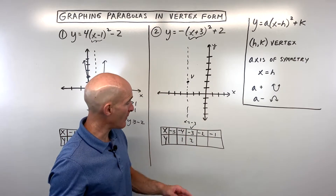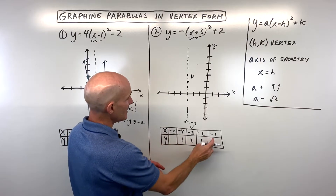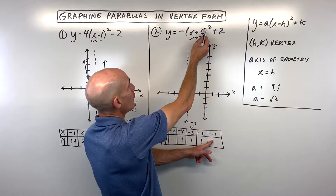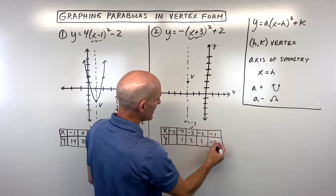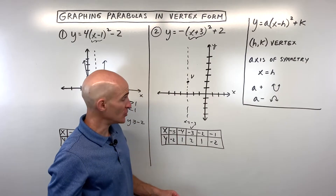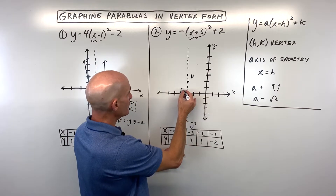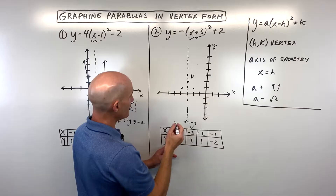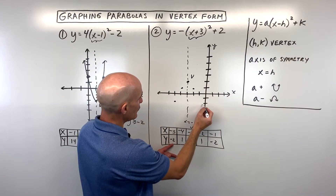Make sure to follow the order of operations. So x equals negative 2 would also give y equals 1 by symmetry. If we plug in negative 1: negative 1 plus 3 is 2. 2 squared is 4. 4 times negative 1 is negative 4. Plus 2 is negative 2. So x equals negative 5 also gives negative 2. Plotting these: negative 4, 1 is right here — same on both sides. Negative 5, negative 2 is right here — same on both sides.